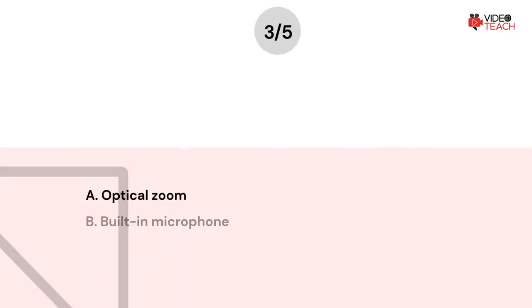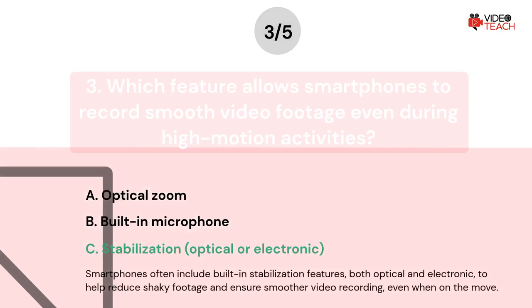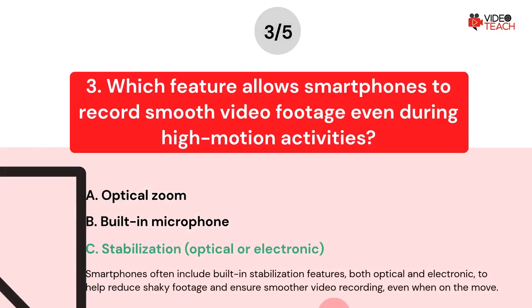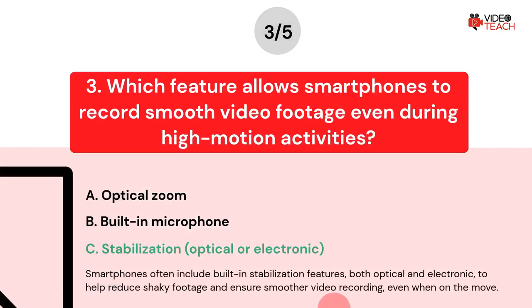The correct answer is C. Smartphones often include built-in stabilization features, both optical and electronic, to help reduce shaky footage and ensure smoother video recording even when on the move.